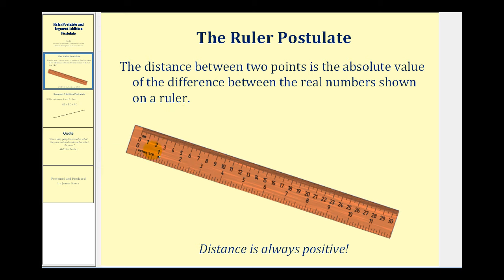So for example, looking at the centimeter side of a ruler, if we want to know the distance from eight to twenty-three, we just need to determine the absolute value of the difference between eight and twenty-three.